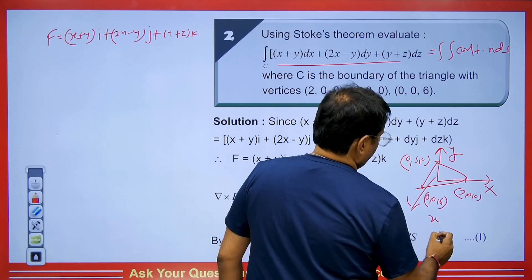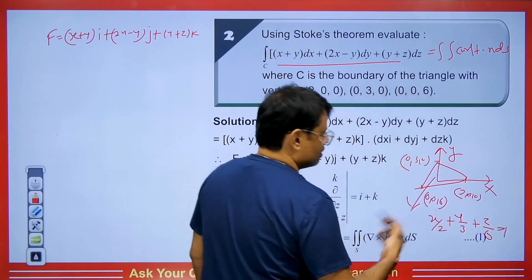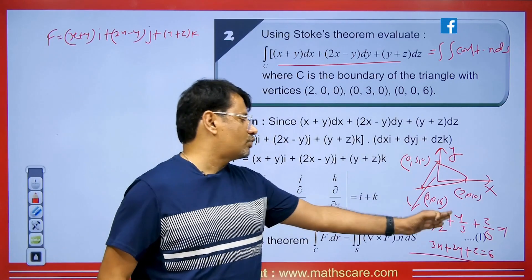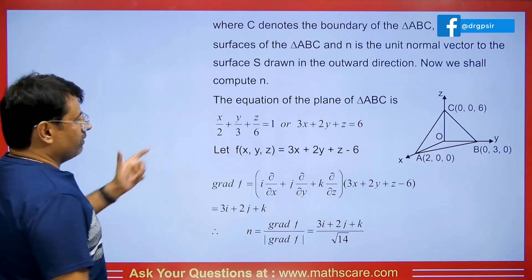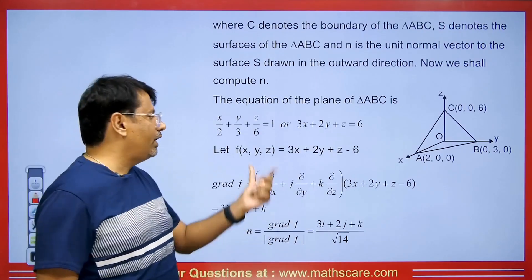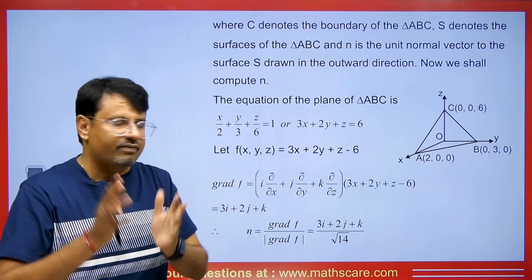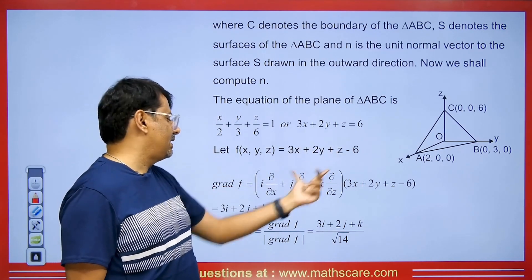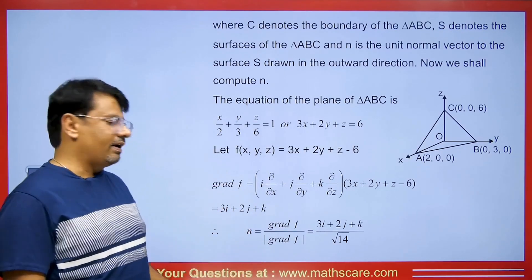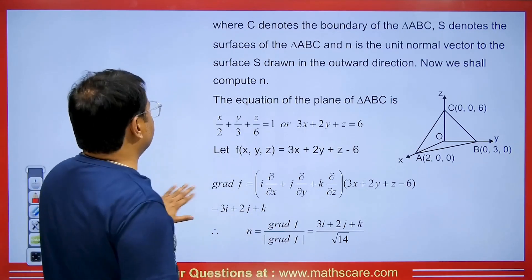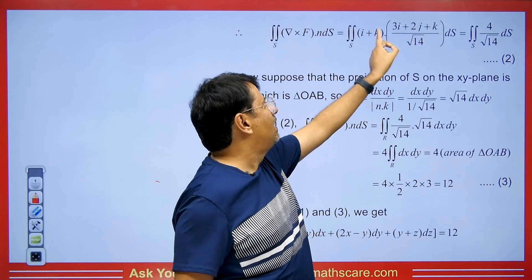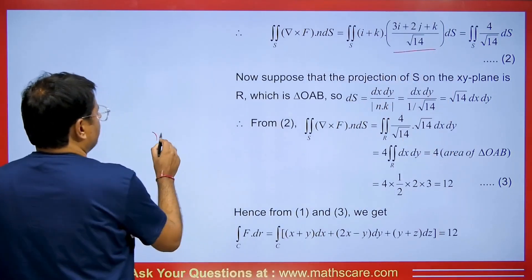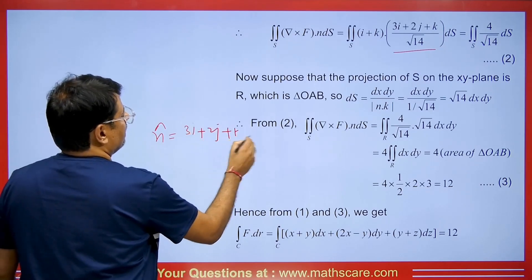Multiplying by 6 gives the plane equation: 3x + 2y + z = 6. To find the unit normal vector, we use n cap = grad(F) / |grad(F)|. Taking the gradient of 3x + 2y + z gives grad F = 3i + 2j + k. Therefore n cap = (3i + 2j + k) / √14. We then compute curl f dot n cap, which gives (i + k) dot (3i + 2j + k)/√14 = (3 + 1)/√14 = 4/√14.